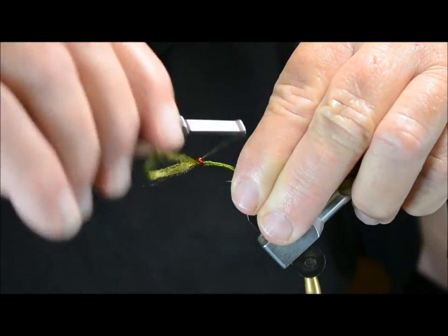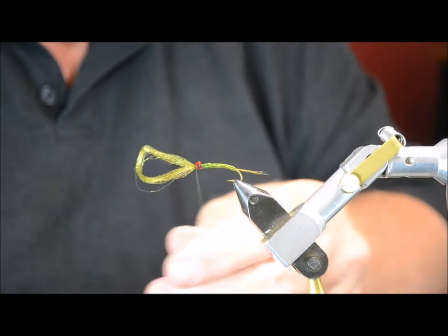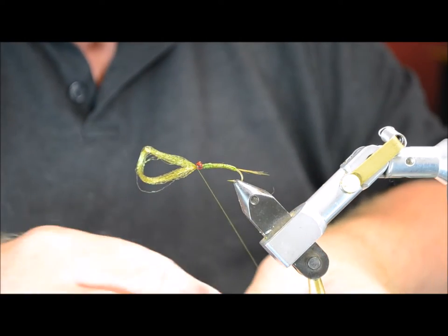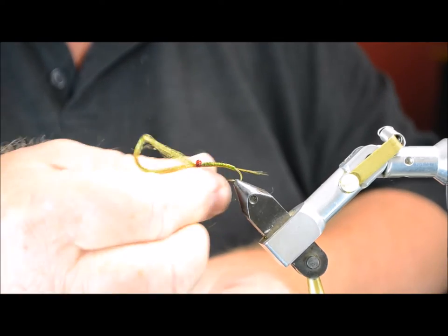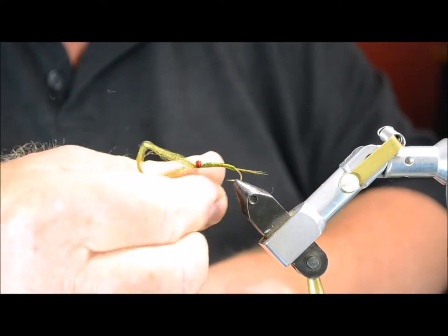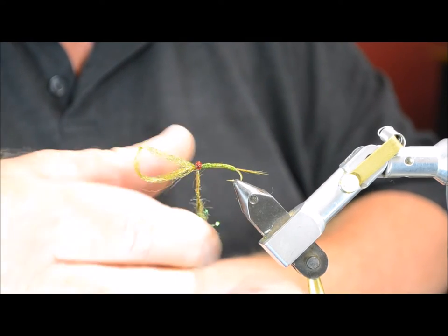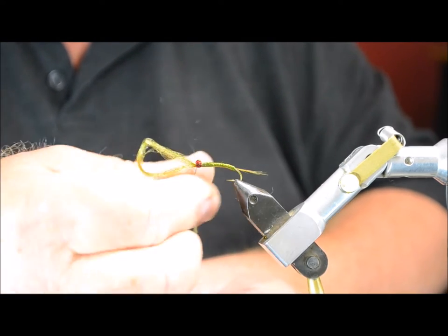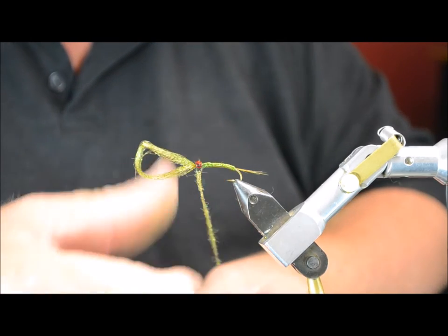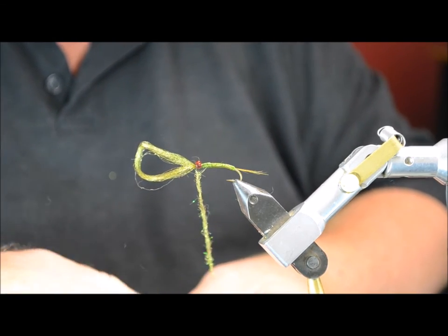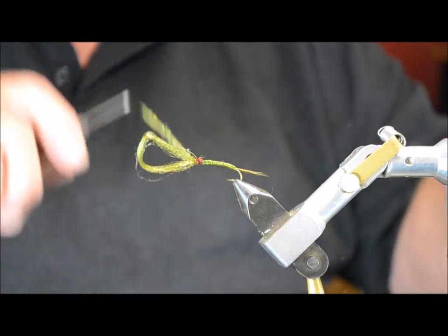A few crisscrosses just to straighten it up. And then we're going to dub over this using our hare's ear dubbing. This is olive brown. Super skinny little noodle. Two and a half inches long should do it.